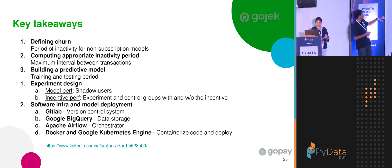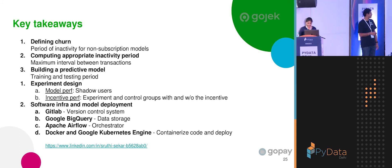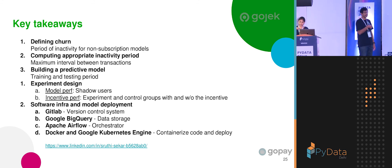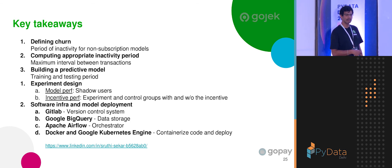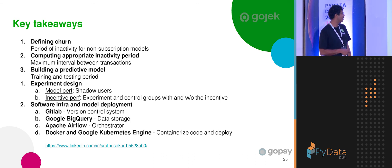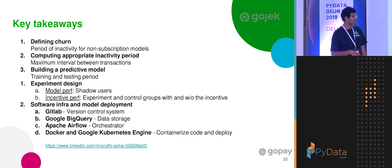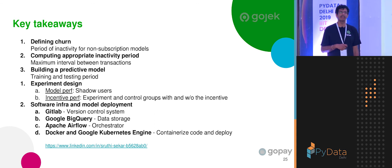Key takeaways: Define churn — in a non-subscription model, inactivity becomes your definition of churn. Compute the appropriate inactivity period using the two-curve divergence analysis we walked through. Build a predictive model — define train and test data, derive features, and choose the training period. For experiment design, if you want to purely measure model performance, don't touch the user — let them churn naturally — and separately calculate incentive performance. For software deployment, Airflow is the key orchestrator and Kubernetes Engine keeps compute separate from Airflow itself. With that, we'll take a pause — happy to take any questions.